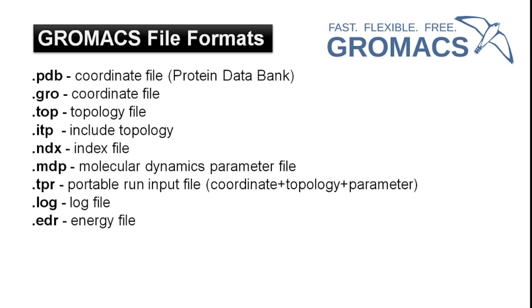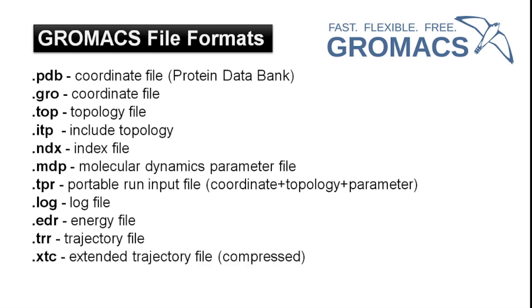The .edr file is an energy file. We get it as output and this file contains information about the temperature and pressure during the simulation run. The .trr file is the trajectory file — it is the main output file where the GROMACS trajectories are written. But the size of the .trr file is very large; it contains a huge amount of information about the whole simulation run and the whole trajectory. Therefore, instead of generating .trr file, we compress this .trr into .xtc — that's why it's known as an extended trajectory file.